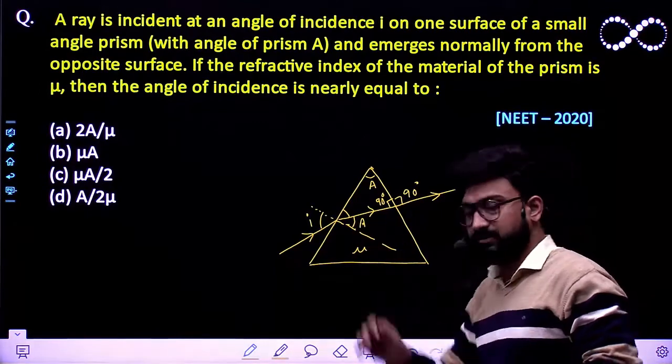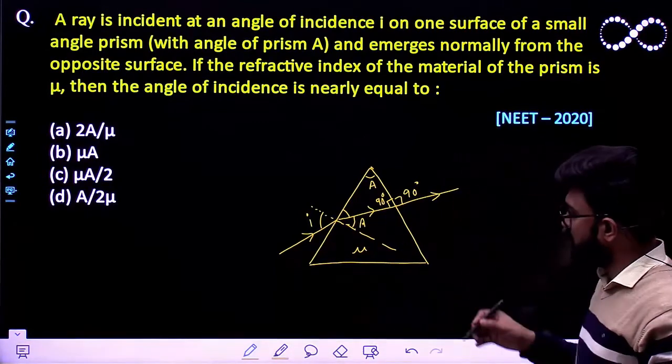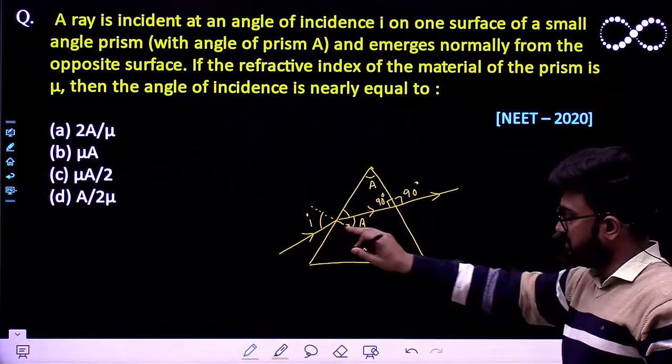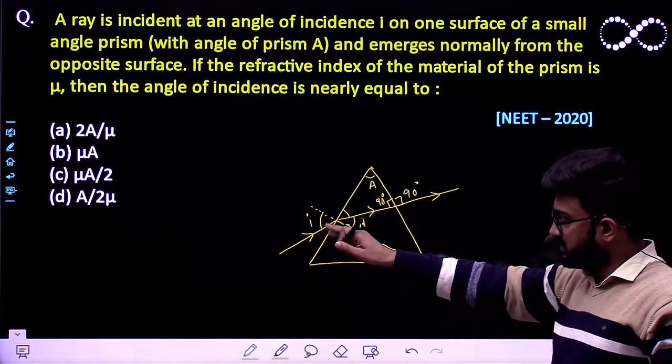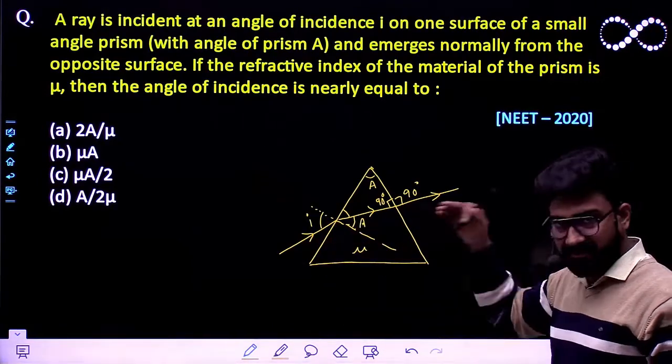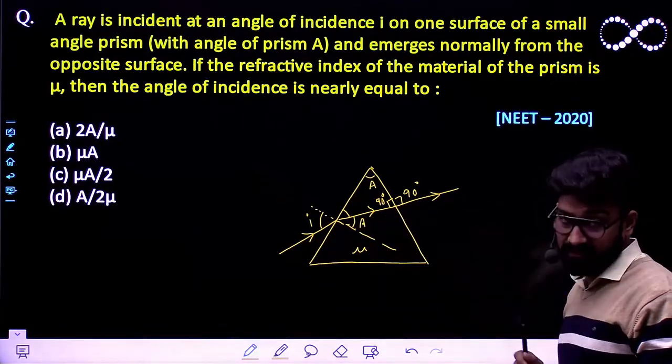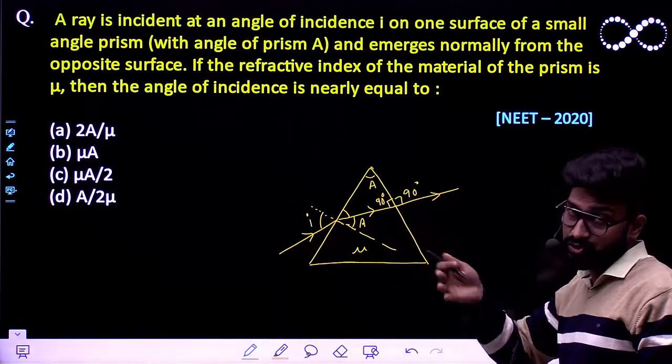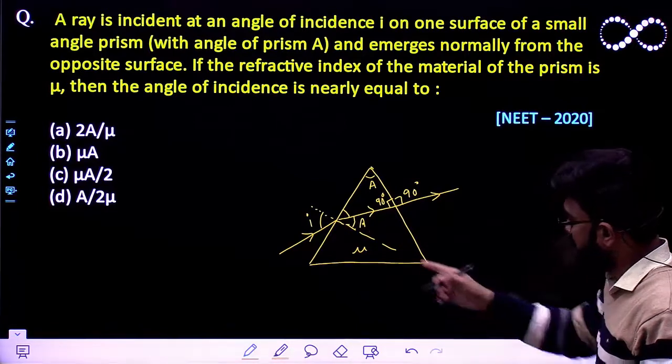Now we can easily make use of Snell's law. Snell's law says the ratio of the sine of the angle of incidence to the sine of the angle of refraction is constant between the two surfaces. That is equivalent to the ratio of the refractive indices.